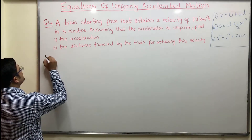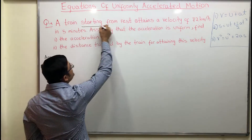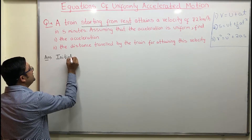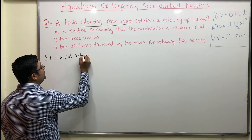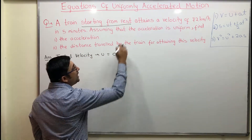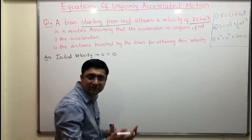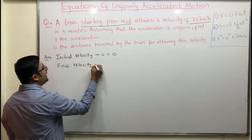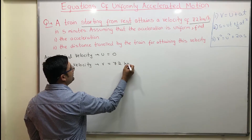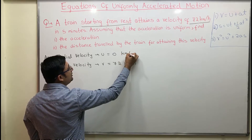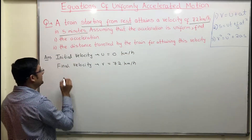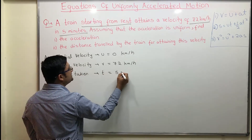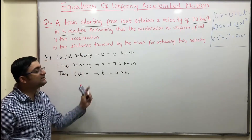The first step is to identify what is given. The train is starting from rest, which means initial velocity u is equal to 0. It attains a velocity of 72 kilometers per hour, so final velocity v is equal to 72 kilometers per hour. Time taken t is given as 5 minutes. Based on this we have to find acceleration and distance traveled.